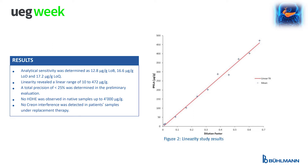Figure 2 depicts a linear range for the rapid test of 10 to 472 micrograms per gram. A high-dose hook effect was evaluated, showing no hook effect in native samples up to 4,000 micrograms per gram. Creon interference was also assessed and no interference was detected in patient samples under replacement therapy.